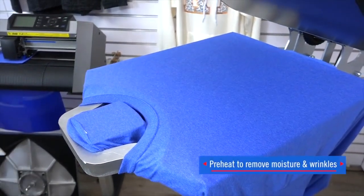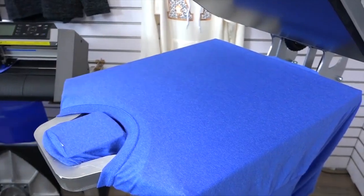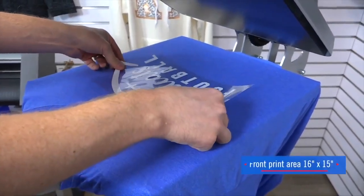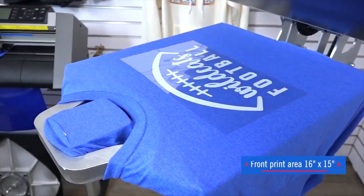And then I can position my front design with whatever transfer product I'm using. In this case, I'm just using a heat transfer vinyl transfer. It has a nice 16 inch wide by 15 inch high print area. So any full front design should just be fine.